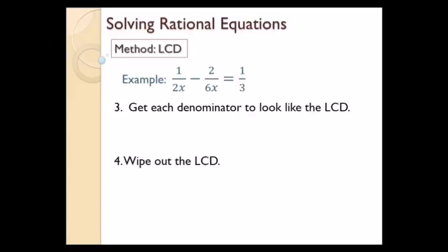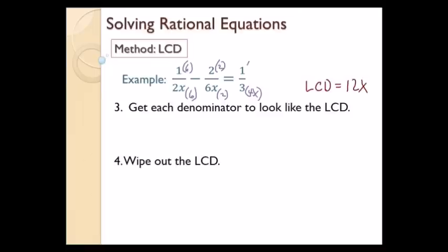Step three: get each denominator to look like the LCD, which is 12x. For 2x I multiply by 6, so I do the same to the top. For 6x I multiply by 2, same to the top. For 3 I multiply by 4x, same to the top. Now I have 6 over 12x, minus 4 over 12x, equals 4x over 12x — all denominators are the same.